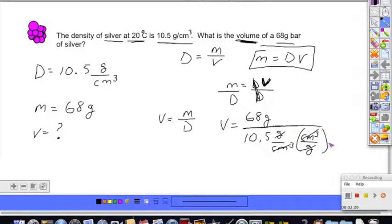They no longer exist. The mathematical rule of thumb, whatever you do to the bottom half of the equation, you need to do the same to the top. So I am going to multiply the top half of this equation by, again, cubic centimeters over grams.